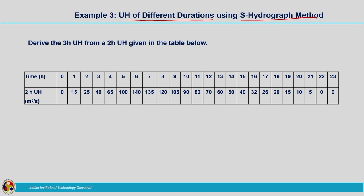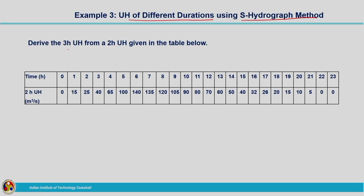Now we will move on to the third example: deriving a unit hydrograph of different durations using the S hydrograph method. Unit hydrographs of different durations can be obtained by either the S hydrograph method or the superposition technique. The question is: derive the 3-hour unit hydrograph from a 2-hour unit hydrograph given in the table. The ordinates are given at an interval of 1 hour, so if you are not separately making the S curve addition column, you need to be very careful while making the additions.